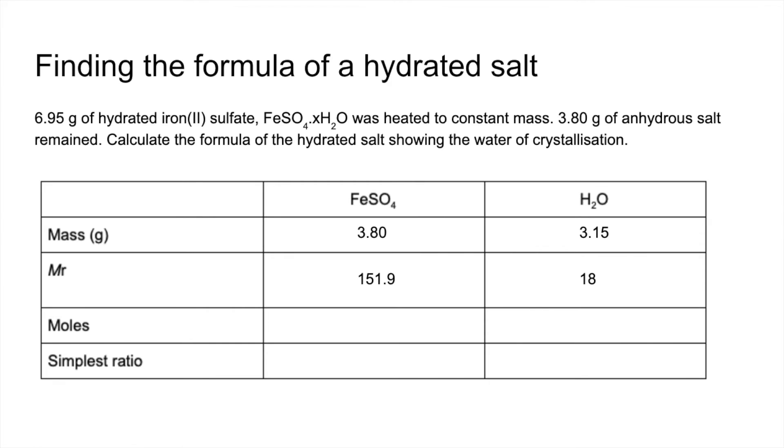Divide by the MRs. That's them in there, and we get the moles coming out at that many there. Divide by the smallest, which is the moles of FeSO4, and we get a 1 to 7 ratio. Therefore, the formula showing the water of crystallization is FeSO4·7H2O.